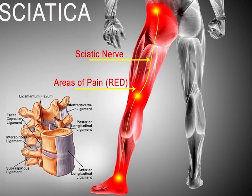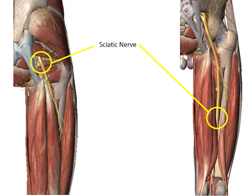The sciatic nerve has no cutaneous branches for the thigh. This nerve provides the connection to the nervous system for the skin of the lateral leg and the whole foot, the muscles of the back of the thigh, and those of the leg and foot. It is derived from spinal nerves L4 to S3.